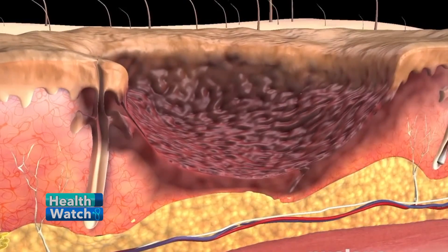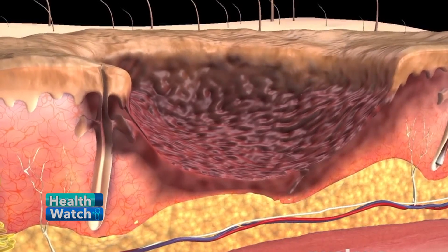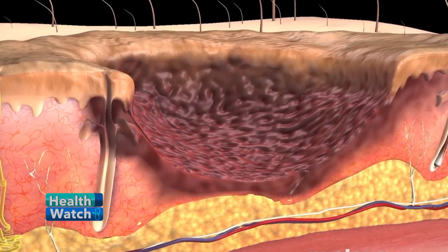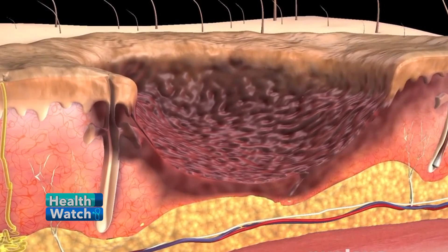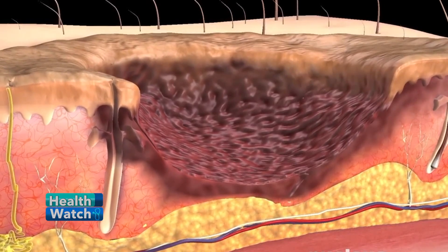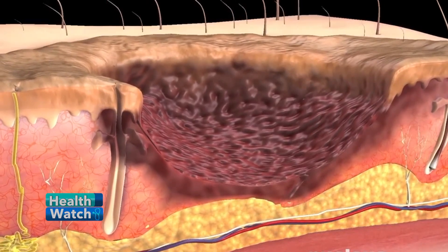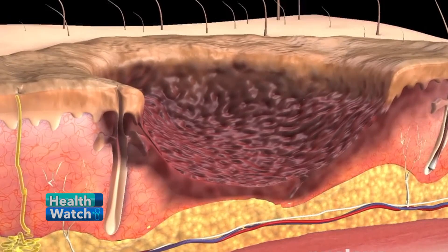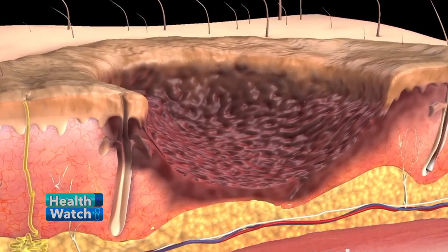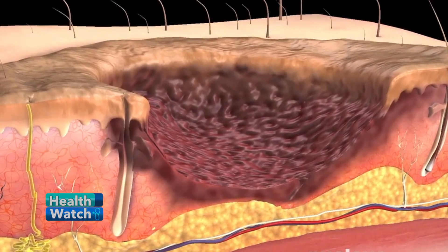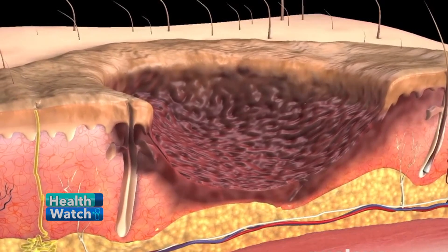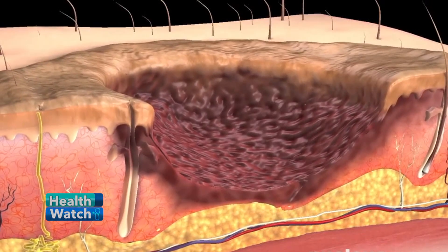The causes will depend on the type of burns. Chemical burns, for example, are caused by caustic substances — most of the time alkalis or acids. Another type would be thermal burns, which can actually be due to open flames.